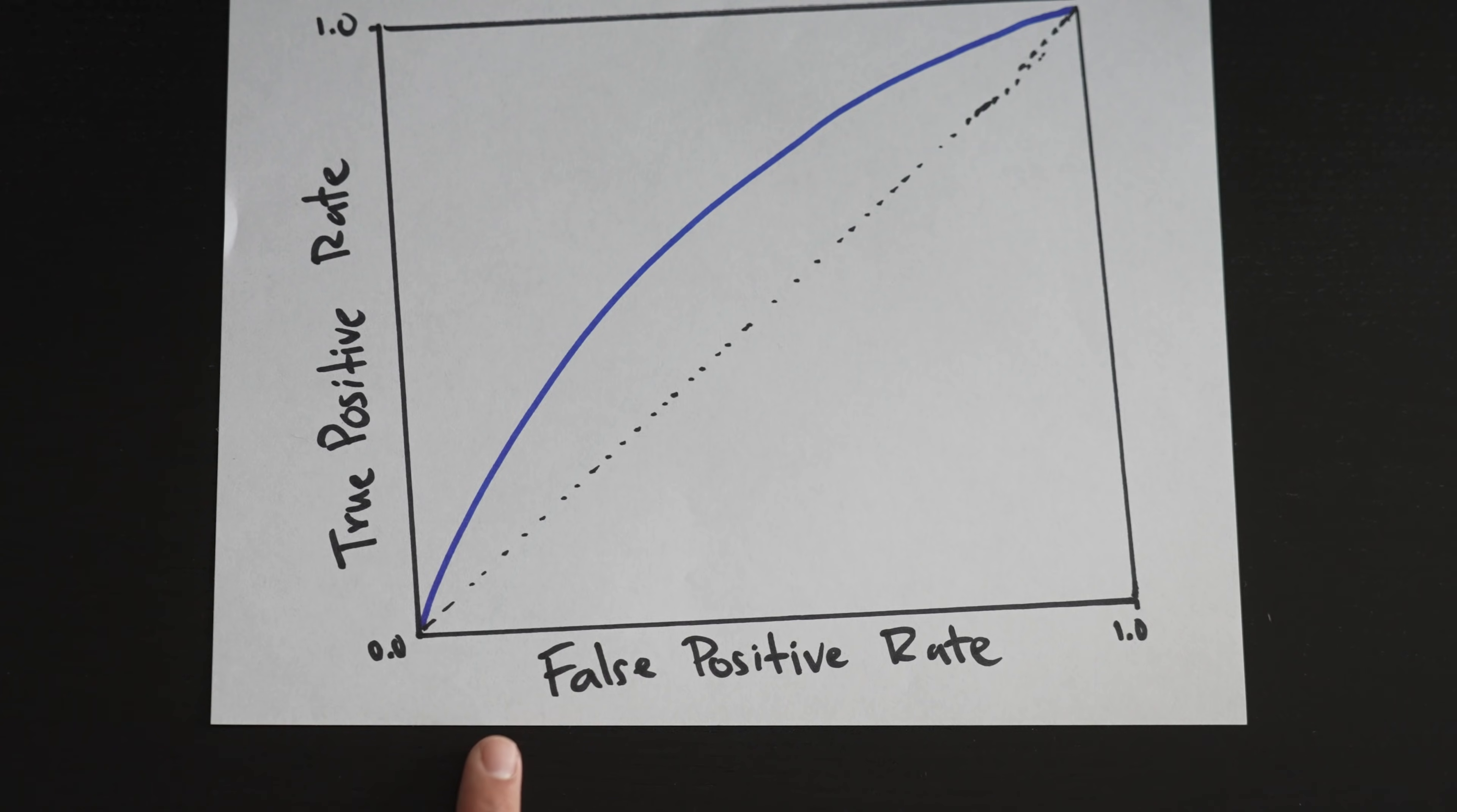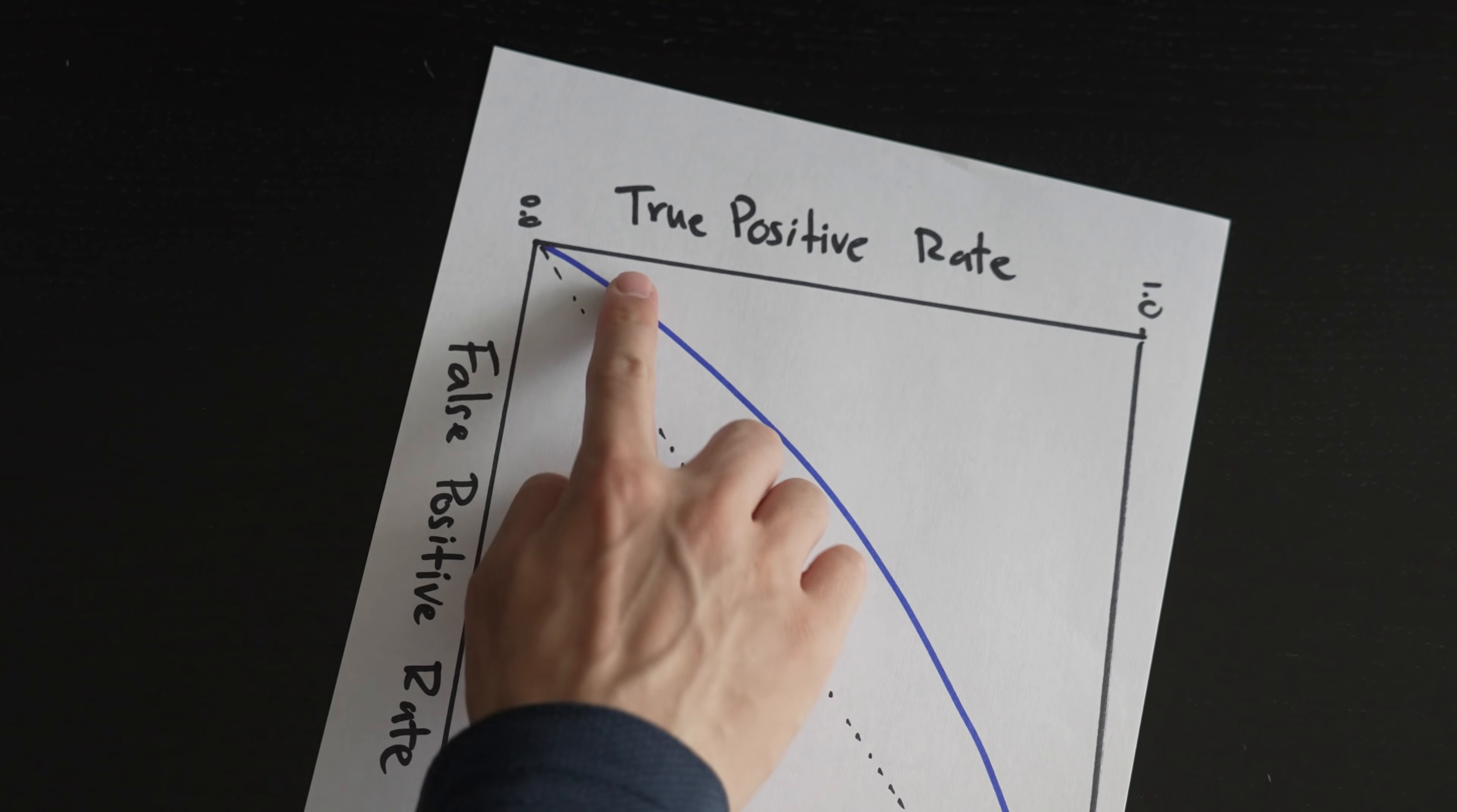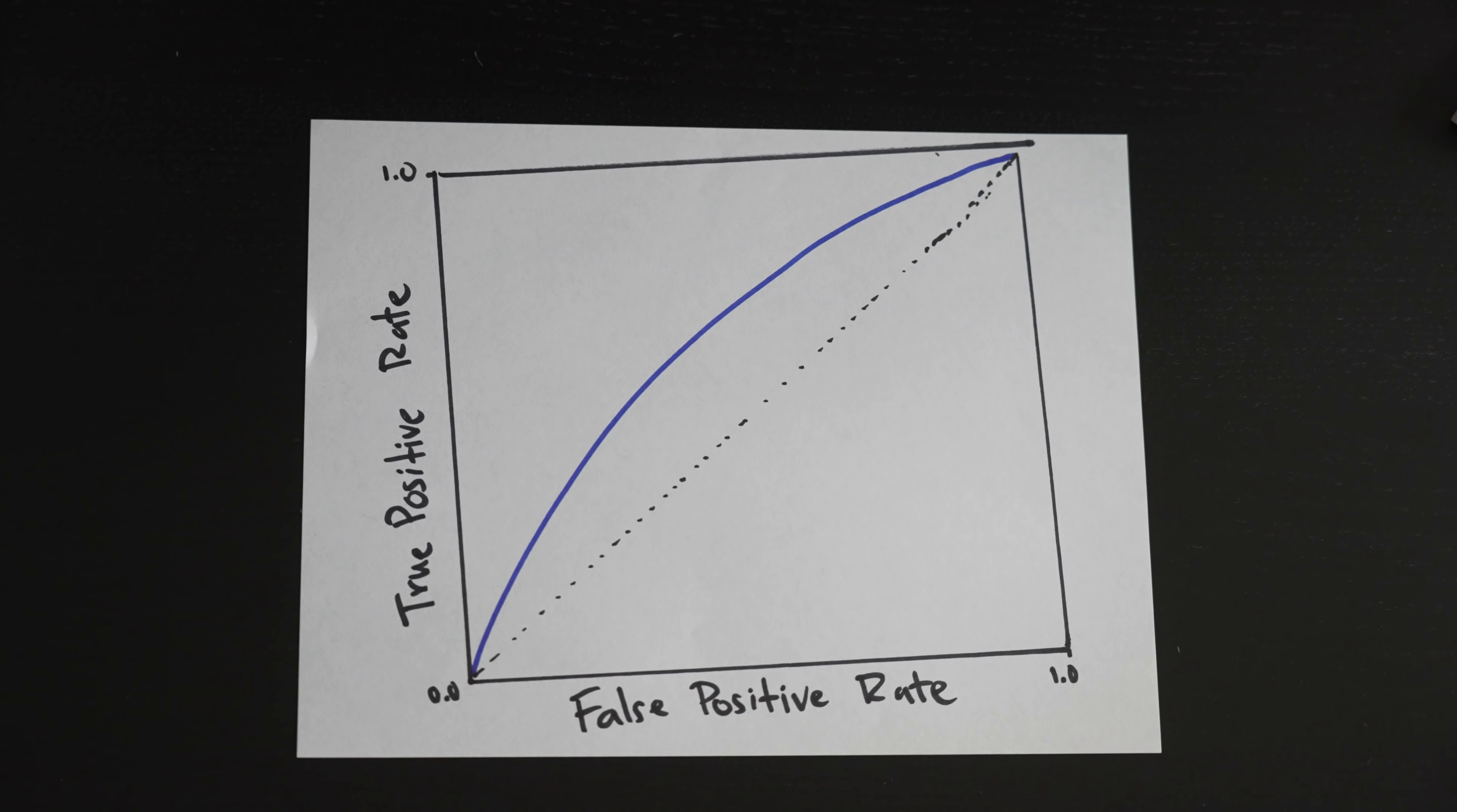On the x-axis, you have false positive rate, and on the y-axis, you have the true positive rate. So to understand this curve, we first have to understand what these rates mean.